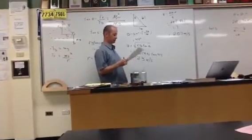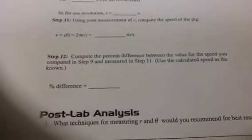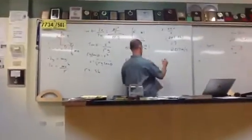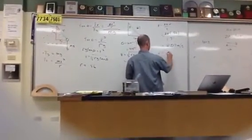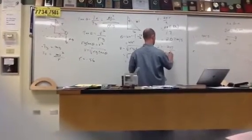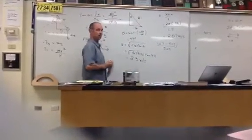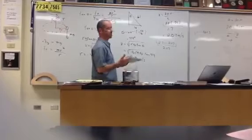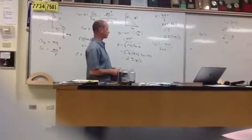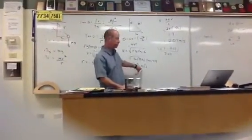What's the percent error? Step number 12 says compute the percent difference between the value of the speed you computed at step 9 and measured at step 11; use the calculated speed as the known. This is the actual number, the actual speed. So the difference is going to be 2.3 minus 2.07, dividing by 2.07 to get our percent difference — 3.3 minus 2.07, then multiply by 100 percent. I got 11 percent.